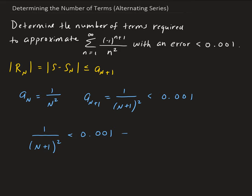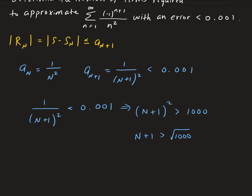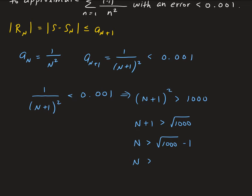From here, if we take the reciprocal of both sides, this is going to give us (n+1) squared greater than 1 over 0.001, which is 1,000. Now I'll just take the square root on both sides. And so then, n has to be bigger than the square root of 1,000 minus 1, and that's going to give us 30.62.